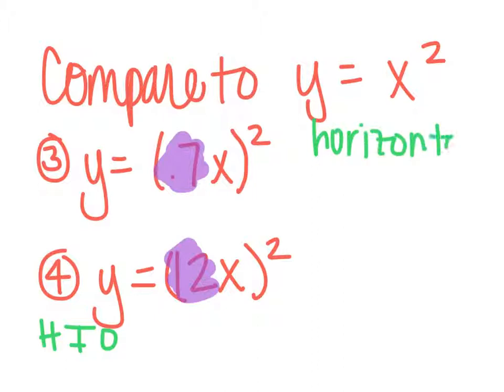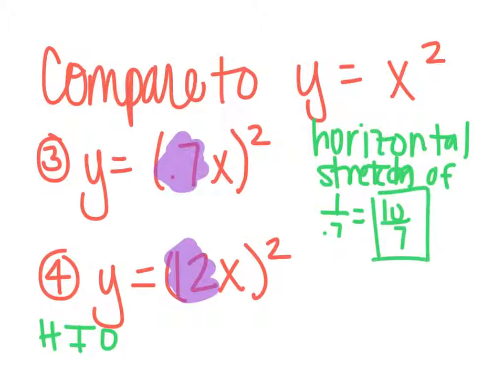This is a horizontal stretch of 1 over 0.7, which if you put that in the calculator, it's actually going to give you a decimal or you can convert it into a fraction. It's going to be 10 over 7, and that's going to be the best thing to leave it in as.